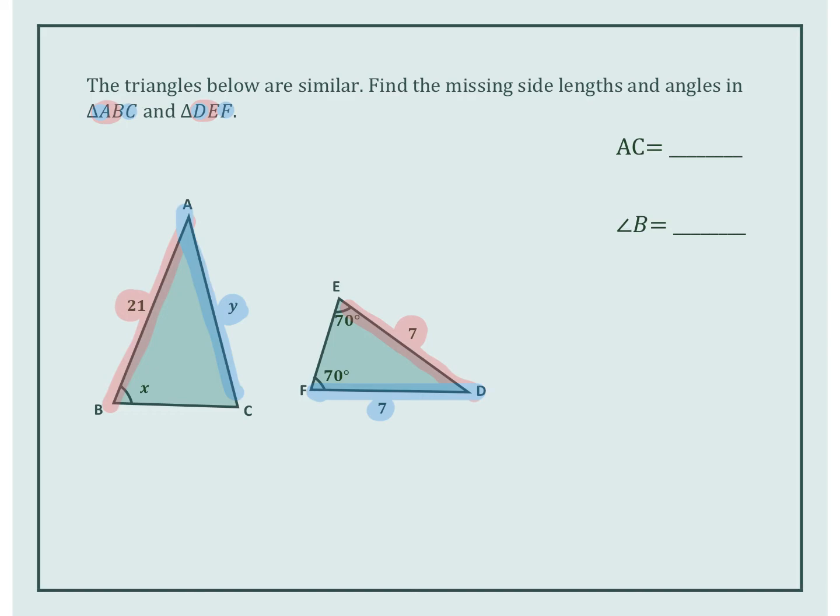So I'm going to start with 21 over 7, those red ones, equals Y over 7. Maybe you guys know what the answer is going to be, but I'm going to go ahead and work it out anyways. I'm going to cross multiply. 21 times 7 is 147 equals 7Y.